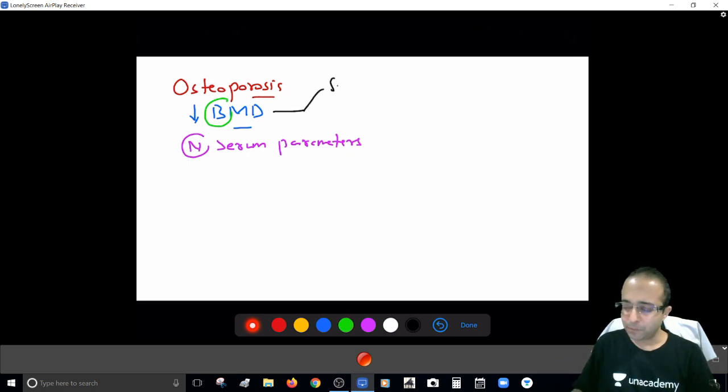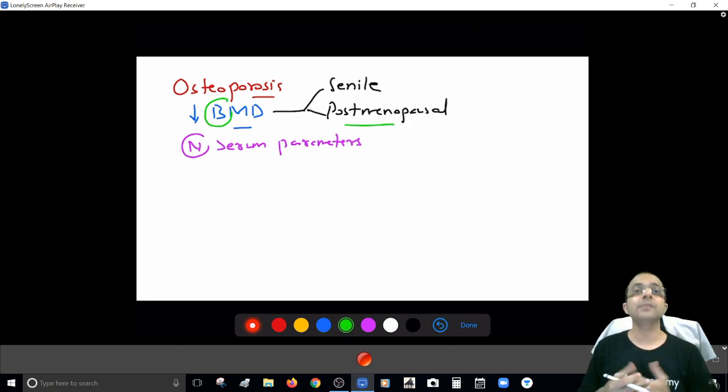So by and large, the problem is either age-related, senile osteoporosis, or menopause-related, post-menopausal. Because after menopause, there is loss of that estrogen stimulus to bone mass. So estrogen goes down, so bone mass starts going down. So either of the two scenarios will lead to decrease in selectively the bone mineral content. That's where we'll call it osteoporosis.